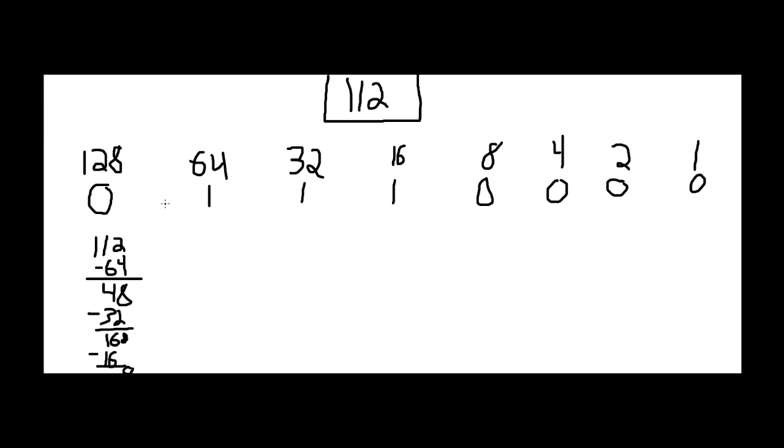And then all you have to do... Some professors will make you write down this first 0 when you actually put down your binary number, but mine doesn't, so 112 in binary is going to be 1, 1, 1, 0, 0, 0, 0.